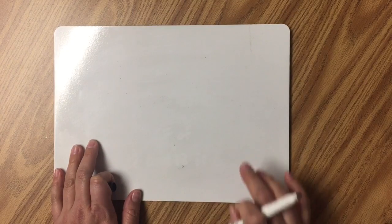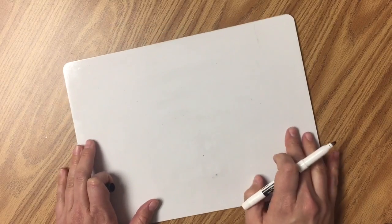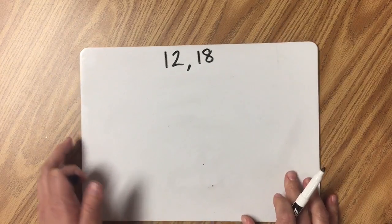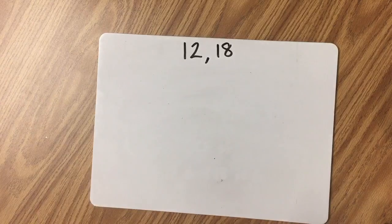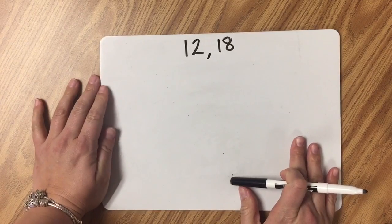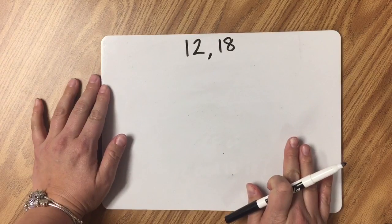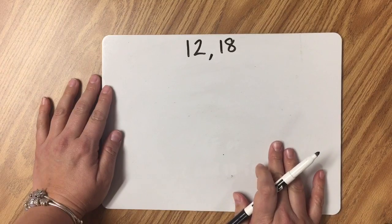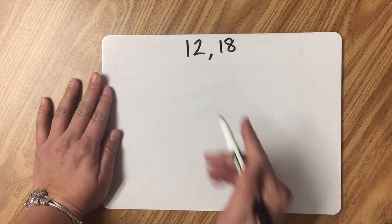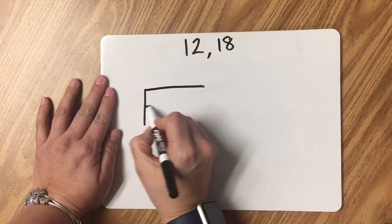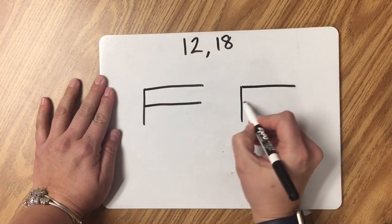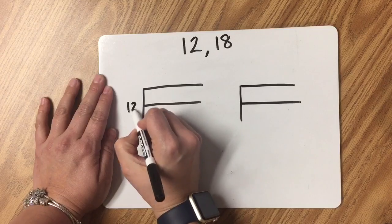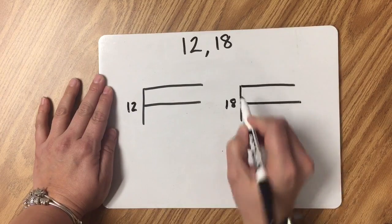The two numbers that I'm going to be working with today and finding the common factors for are 12 and 18. So one of the tricks that I use is to write a big F for each of the numbers that I'm finding the factors for. I do that because it helps to remind me that I'm finding factors and not multiples. A really long sort of weird looking F and I write one for each of the numbers. One for the 12, one for the 18.